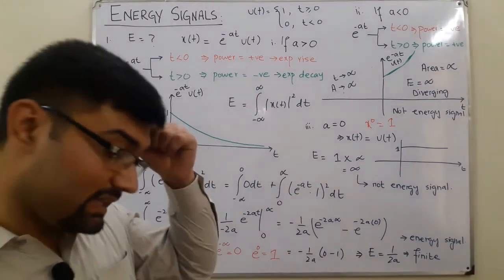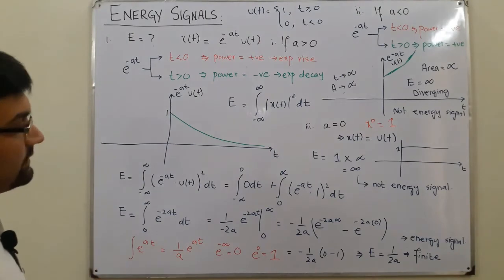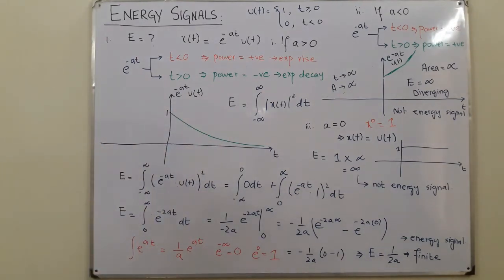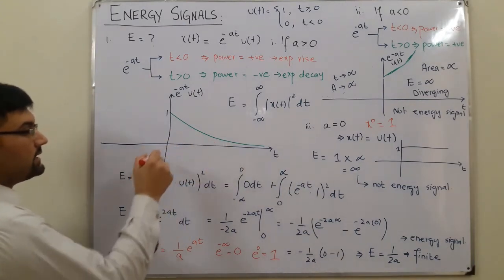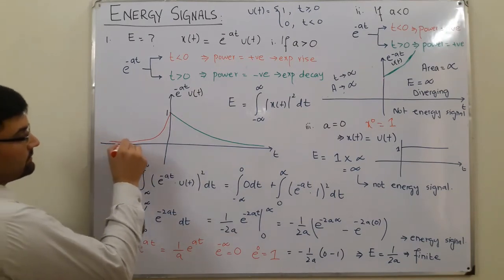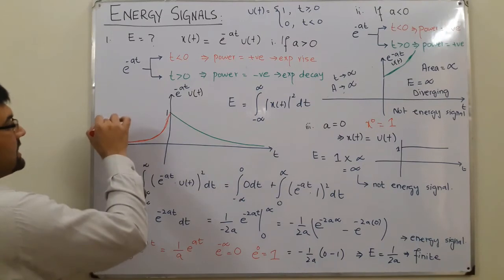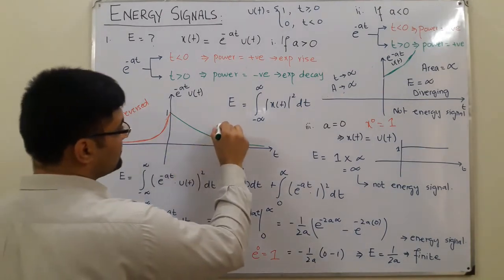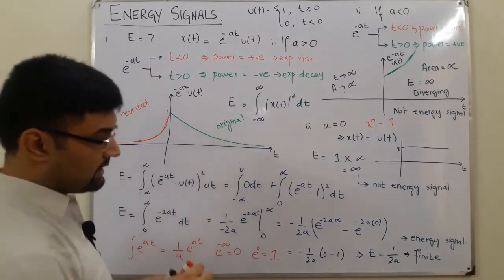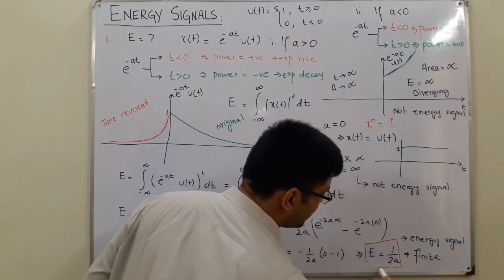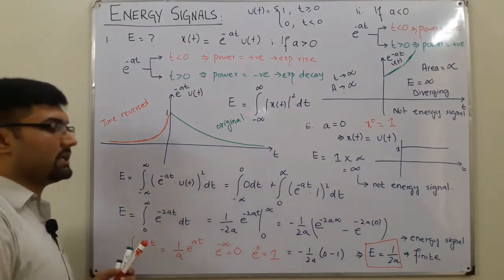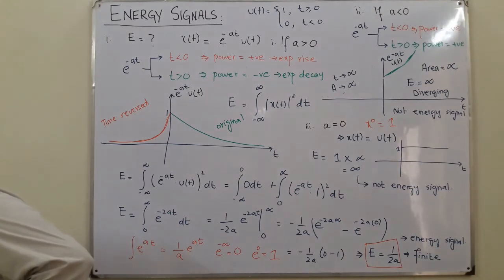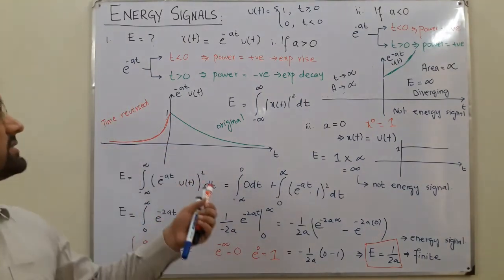Now, if you time-reverse the signal - take its mirror image about the y-axis - it will have the same energy. The green signal is the original and the time-reversed version is its mirror. These two signals have the same energy values. This means time reversal has no effect on the energy of a signal. We'll discuss this in detail in the next video, but you can verify it yourself for all three cases.